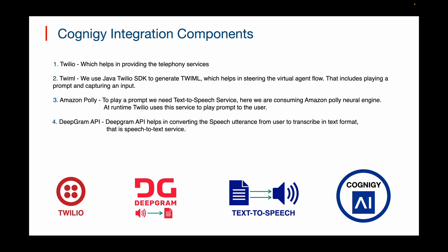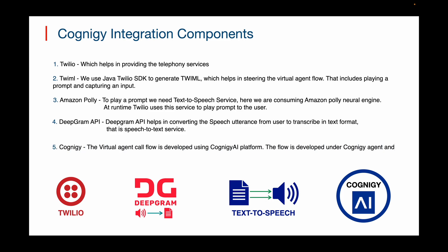The user-uttered voice is converted into text. 5. Cognigy — the virtual agent call flow is developed using the Cognigy platform. The Cognigy endpoint API exposed by this platform helps in integrating the Twilio SDK and the virtual agent. This REST endpoint API allows the Cognigy agent to be integrated with custom applications. This API takes the user utterance along with user ID and session ID as input. Cognigy platform processes the user input and provides the next best action as per the agent flow, along with session management, following the call flow design, providing the next best action, and calling custom APIs.